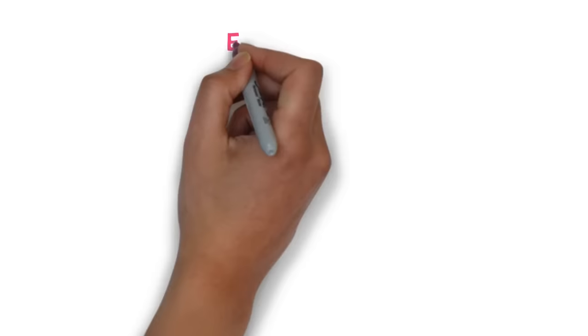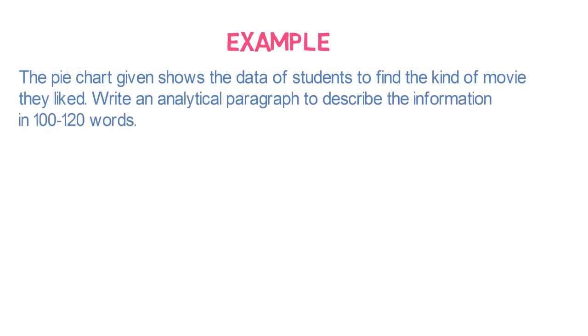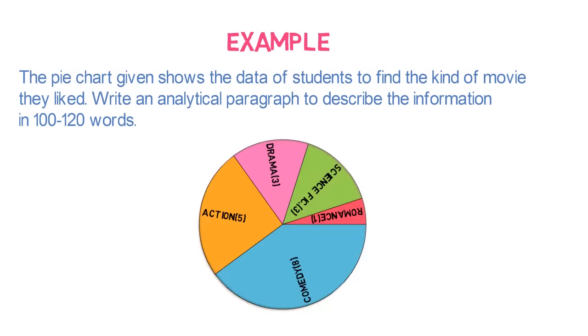Let's understand this format with an example. The question is: the pie chart given shows the data of students to find the kind of movie they liked. Write an analytical paragraph to describe the information in 100 to 120 words. Let's start writing the analytical paragraph. First comes the introduction. Here, we need to write what the chart represents.